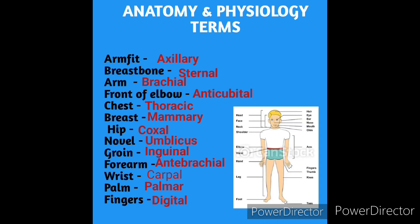The terminology of anatomy and physiology: armpit: axillary. Breastbone: sternal. Arm: brachial. Front of elbow: antecubital. Chest: thoracic. Breast: mammary. Hip: coxal. Navel: umbilicus. Groin: inguinal. Forearm: antebrachial. Wrist: carpal. Palm: palmar. Fingers: digital.